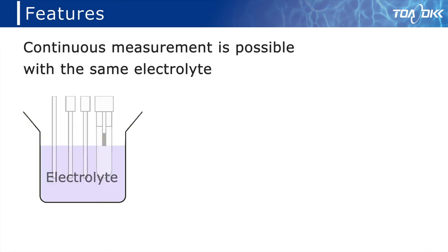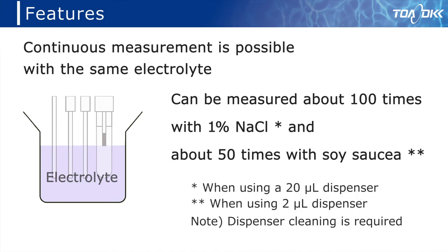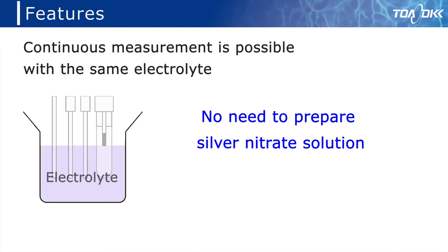The fourth feature is that continuous measurement is possible with the same electrolyte. It is possible to measure about 100 times with 1% NaCl and about 50 times with soy sauce. There is no need to prepare a silver nitrate solution for manual analysis. In addition, the amount of waste liquid can be reduced.